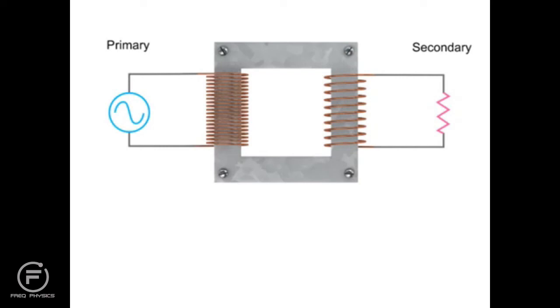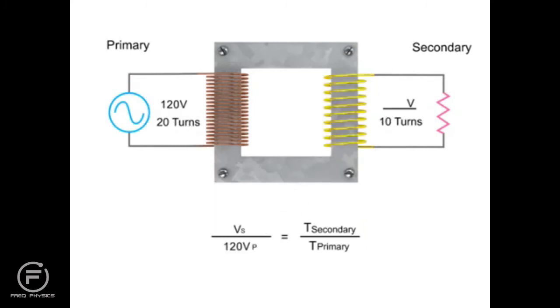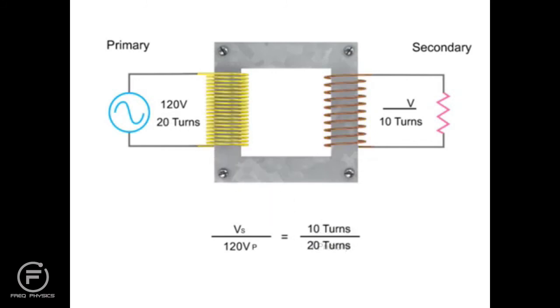In this example, we have 20 turns on the primary coil and 10 turns on the secondary coil. To determine the decrease in voltage occurring in this step down transformer, we can use a simple ratio formula. This formula simply states that the secondary voltage to primary voltage ratio is the same as the secondary coil to primary coil turn ratio.